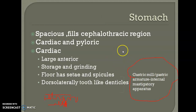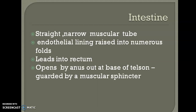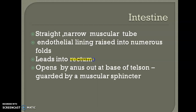The pyloric stomach is produced into four folds, also called lappets or valvuli: a dorsal median one, a ventromedian, and lateral ones. These folds extend backward to the midgut and incompletely divide the pyloric stomach into different compartments, acting as a filtering apparatus formed of chitinous plates and comb-like bristles. Extending from the pyloric stomach is the hindgut intestine, which is a straight, narrow, tubular tube running along the entire length of the abdomen. Its endothelial lining has numerous folds which reduce its lumen. It leads into the rectum, which opens out to the anus.